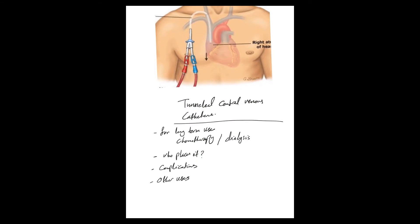We'll start with the tunneled central venous catheter. The definition of a central venous catheter is that it ends in the superior vena cava, right at the cavo-atrial junction. With the tunnel, they create two incisions — one here and one here — and go in to stick the vein, putting the tip of the catheter right at the cavo-atrial junction, just above the right atrium.